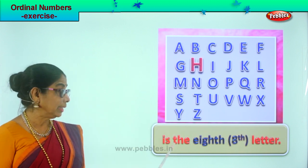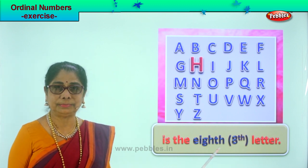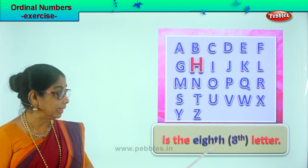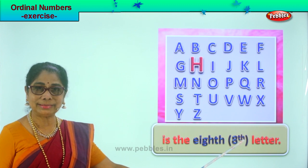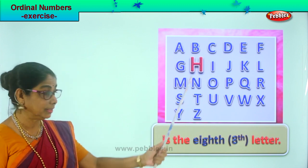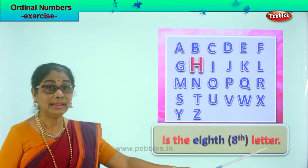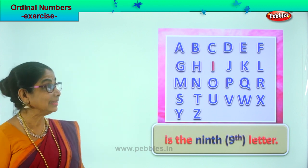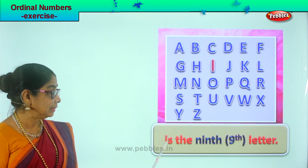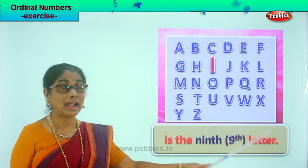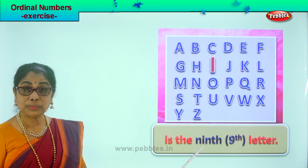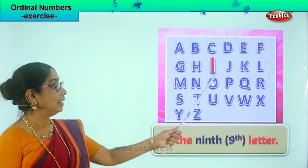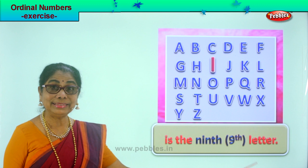H is the eighth letter. Look at the spelling of ordinal number eight — representation is eight and TH. H is the eighth letter. Next, I is the ninth letter. Look at the spelling: N-I-N-T-H. How do you represent it? Nine and TH. I is the ninth letter.